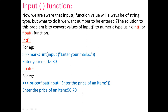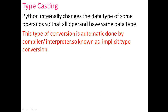The input function receives a value in the form of a string. According to our program requirement, we can convert it into int or float. Next, we will discuss type casting, which is an important topic. Python internally changes the data type of some operands so that all operands have the same data type. Sometimes expressions involve mixed data types — one operand may be a string, another an integer, and another a float.